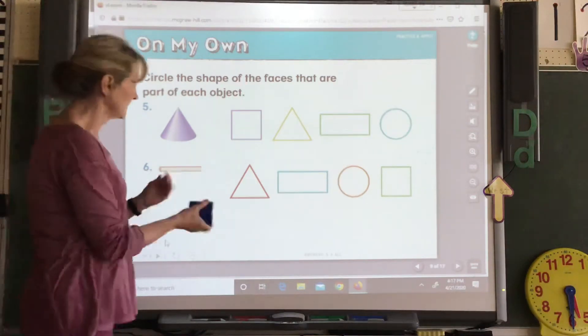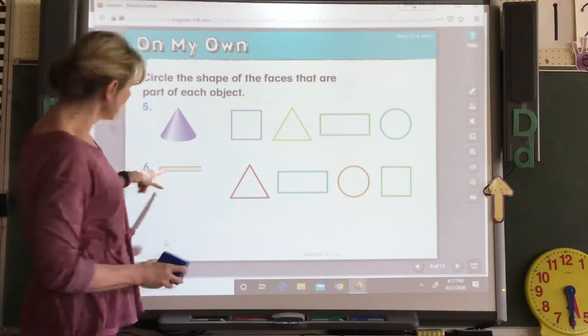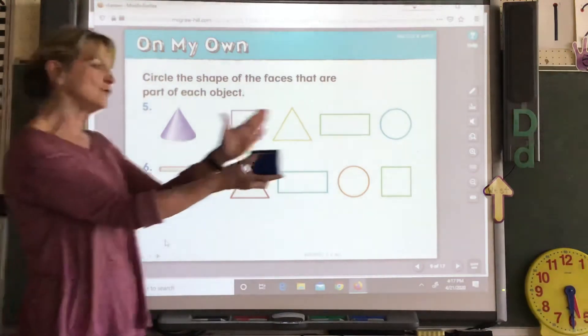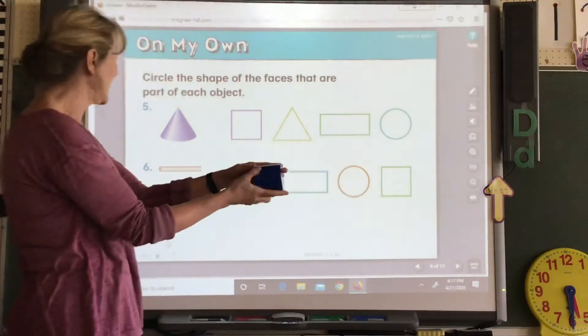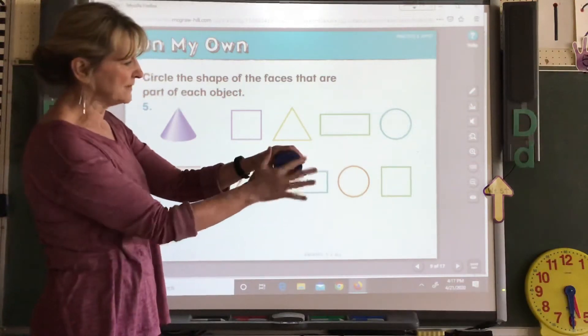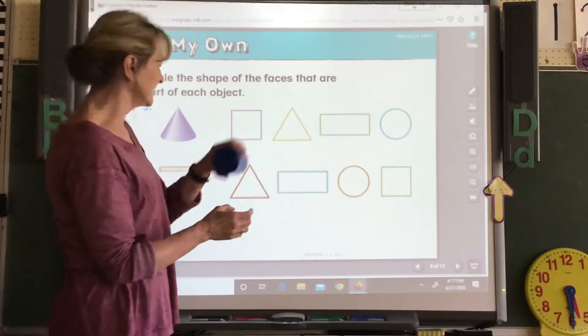Okay. Here's your cylinder. If you look at this here, it kind of looks like a rectangle, the picture of it. But if you get your 3D shape and you look at the faces, what shape is the face? Find it and circle it.